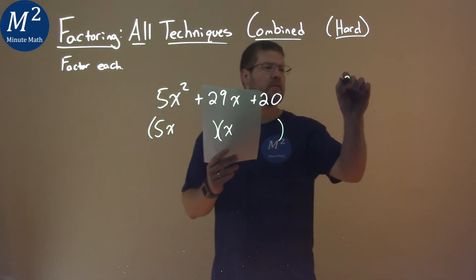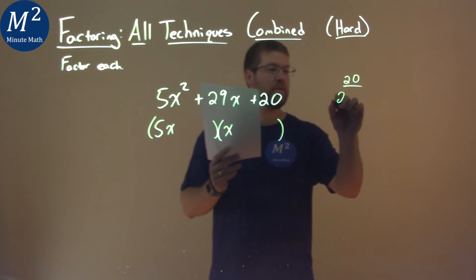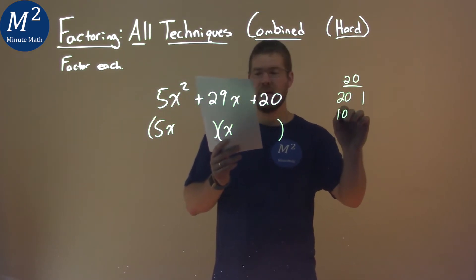Our c value is 20, so let's break down the numbers that multiply to be that c value that's 20. That's 20 and 1, 10 and 2, and 5 and 4.